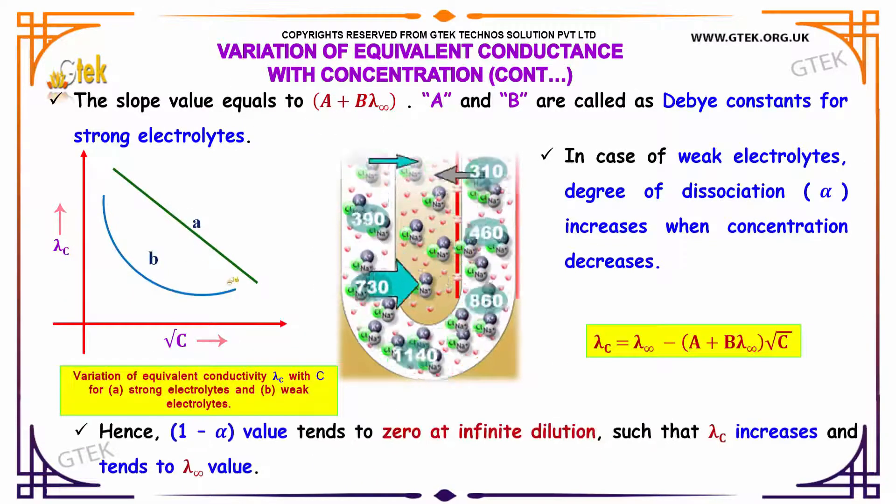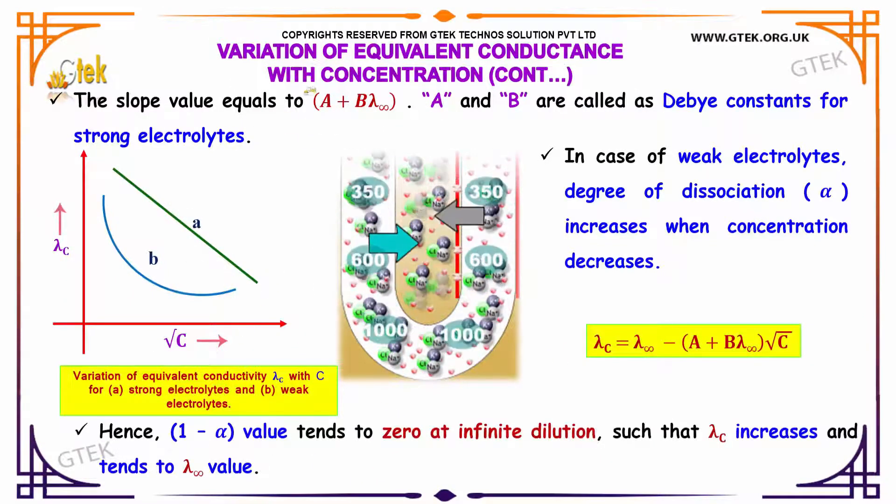The slope value equals to A plus B lambda infinity. Here A and B are called as Debye constants for strong electrolytes.